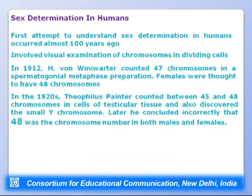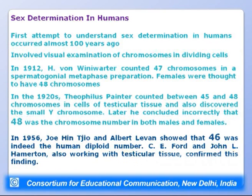In the 1920s, Theophilus Painter counted between 45 and 48 chromosomes in testicular tissue cells and discovered the smaller Y chromosome, but incorrectly concluded 48 was the human chromosome number. It was not until 1956 that Joe Hin Tjio and Albert Levan showed 46 was indeed the human diploid number, confirmed by Ford and John L. Hamerton also working with testicular tissue.